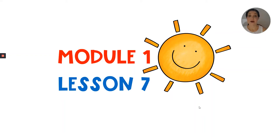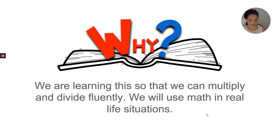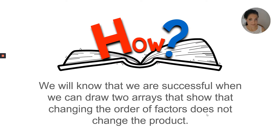Welcome to Module 1, Lesson 7. Today we will be learning how to use the commutative property in multiplication. We are learning this so that we can multiply and divide fluently. We will use math in real life situations. We will know that we are successful when we can draw two arrays that show that changing the order of factors does not change the product.